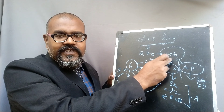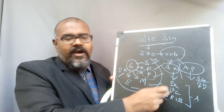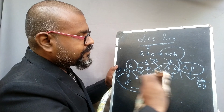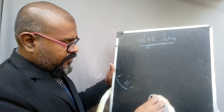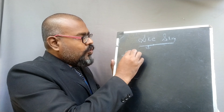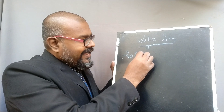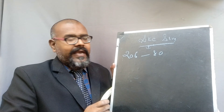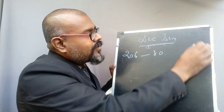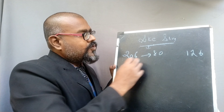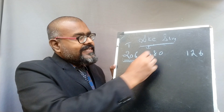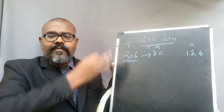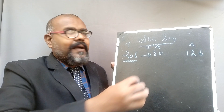Of the 206 total bones, the axial skeleton includes 80 bones and the appendicular skeleton includes 126 bones. The skull contains 22 bones plus associated bones. The vertebral column consists of 32 to 34 bones — the range exists because some humans have variations in the sacral and coccygeal segments, which vary by body size. The ribcage has 12 pairs, that is 24 bones, located in the sternum region.